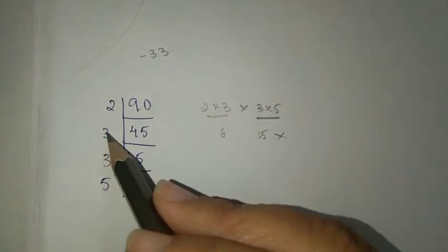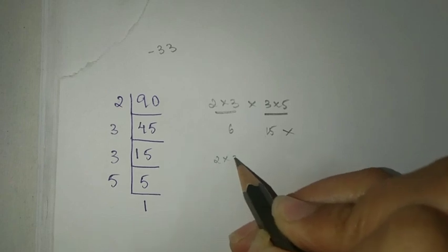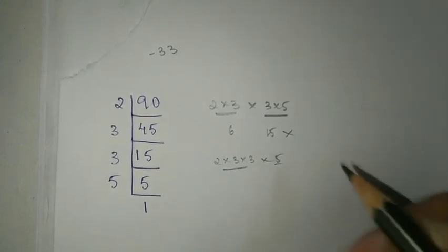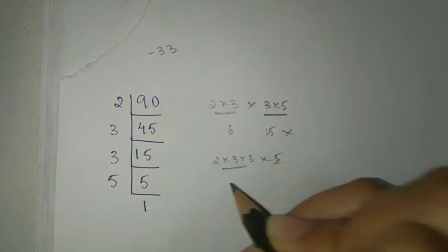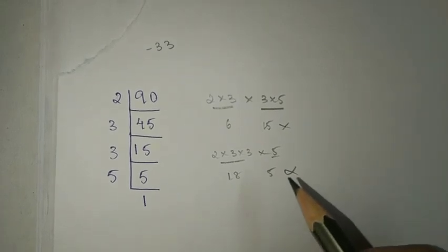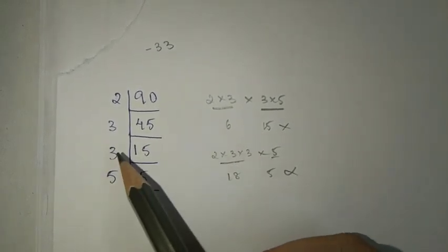Now, let's group 2, 3, 3 together, and leave 5 separate. 3 threes are 9, 9 twos are 18. Now we have 18 and 5. 18 plus 5 or 18 minus 5 doesn't give us 33.